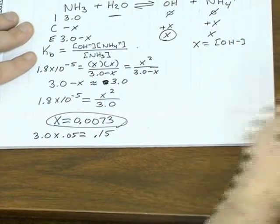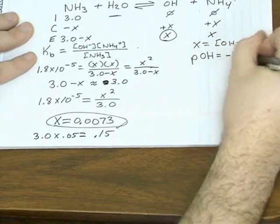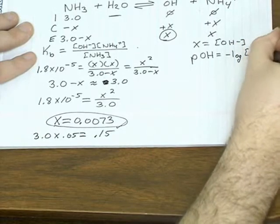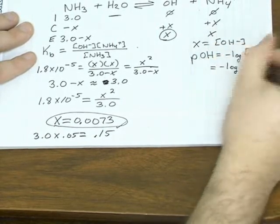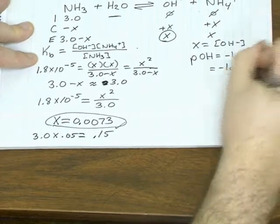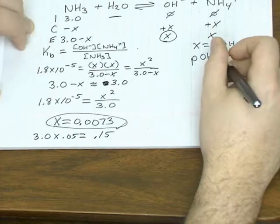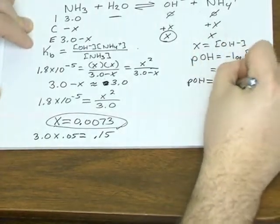So you can still use x to find the pH, but really you have to find the pOH first. pOH is the negative log of hydroxide. So you take the negative log of 0.0073, and that gives you a pOH equal to 2.1.